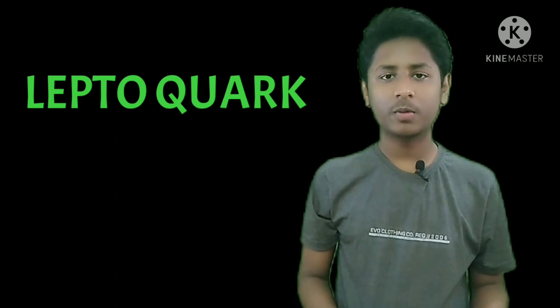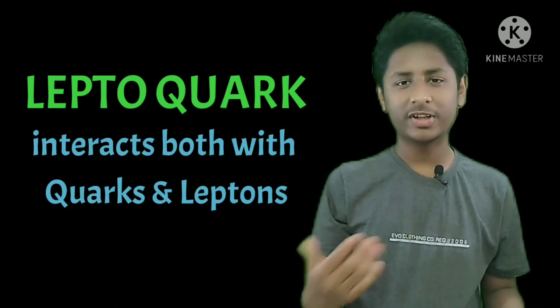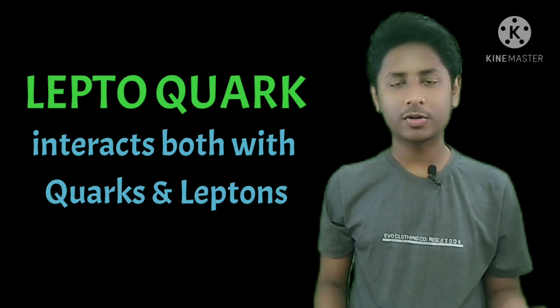then a hypothetical particle called a leptoquark can explain the observations. A leptoquark is a particle which interacts both with leptons and quarks. A leptoquark, if it truly exists, must be heavier than any of the particles we have observed so far, because if not, it would have already been observed.